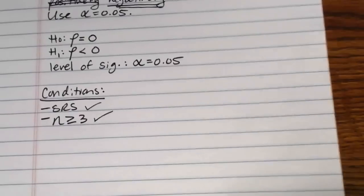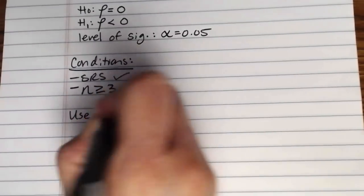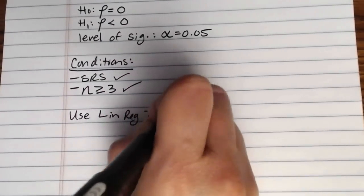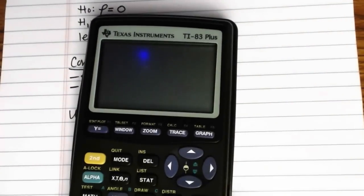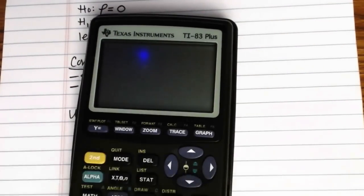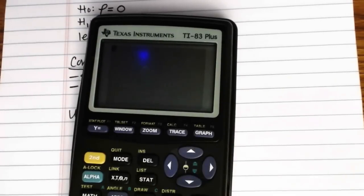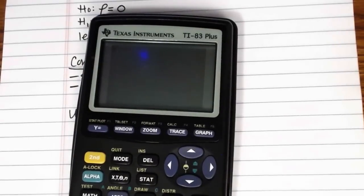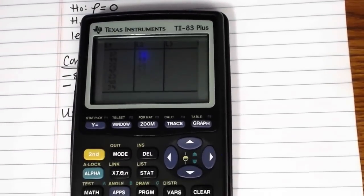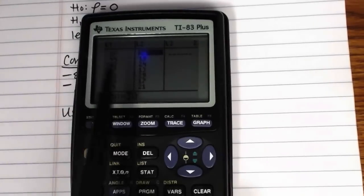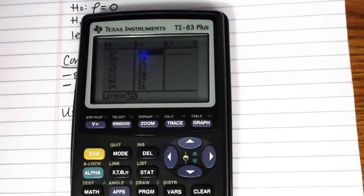So we want to use LinReg T-test. And I'll show you how this works in the calculator. First, you would have needed to have your data put in. So first you would have needed to have your data put in the calculator. So if you go into stat and edit, if you've been following along with the last couple of videos, your data might still be there. If they're not already there, you would want to put that back in.